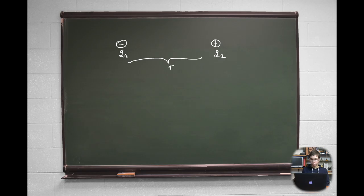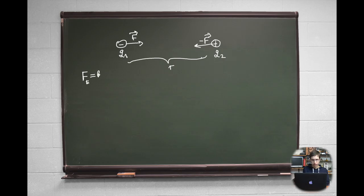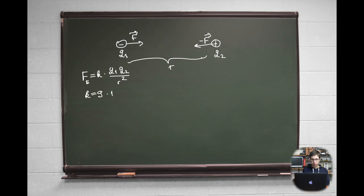Let's take an example of two charges Q1 and Q2 which have opposite signs — one negative and one positive — with distance r between them. They attract each other with a force of the same magnitude but opposite sign. The electrostatic force, i.e. Coulomb's force, is expressed as: Fe equals K times Q1 times Q2 over r squared. Here Fe is the electrostatic force, Q1 and Q2 are the two charges, r is the distance between them, and K is the constant of proportionality, which primarily depends on the medium. For vacuum it is K equals 9 times 10 to the 9th power Newton meter squared per Coulomb squared.